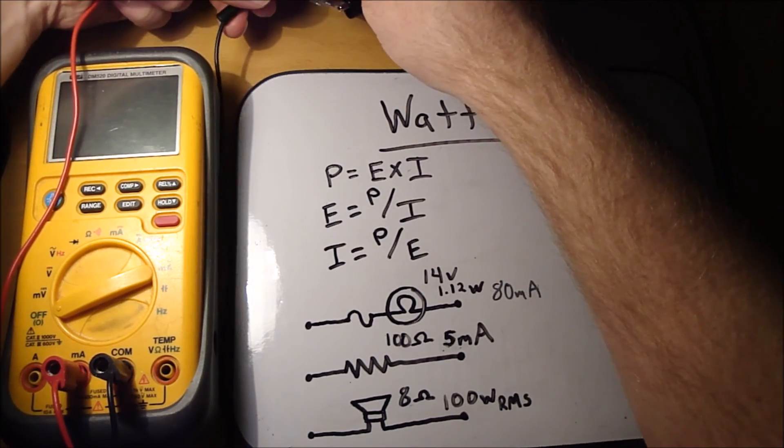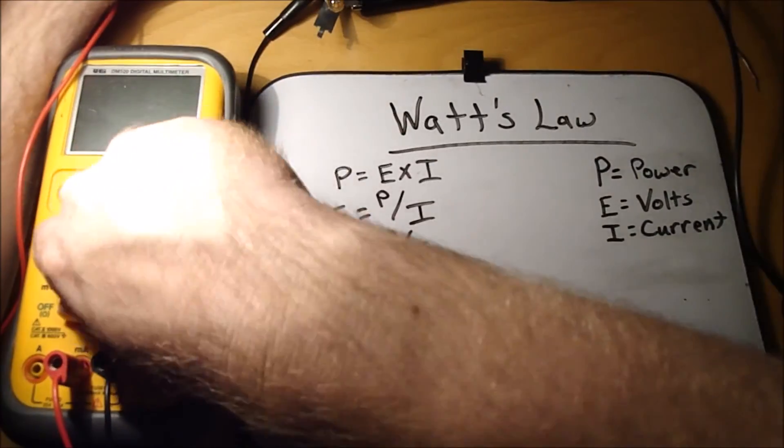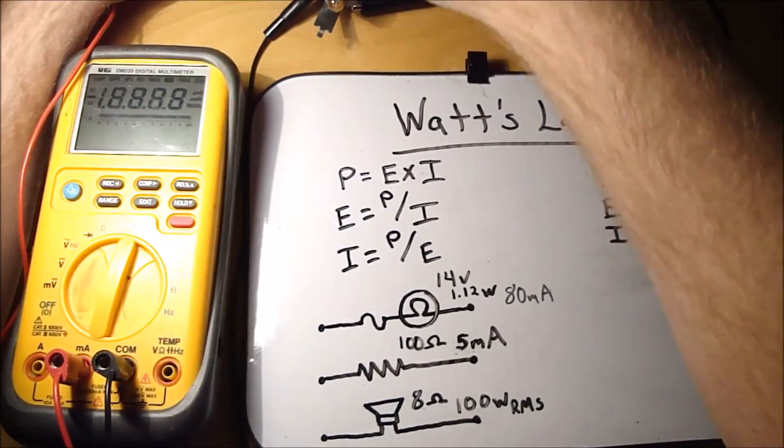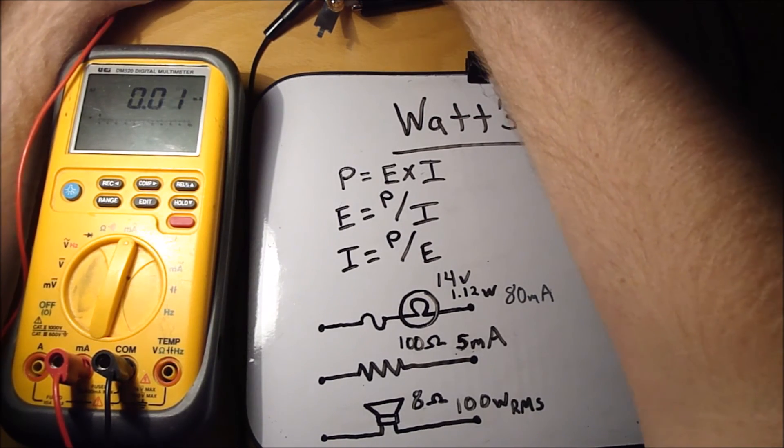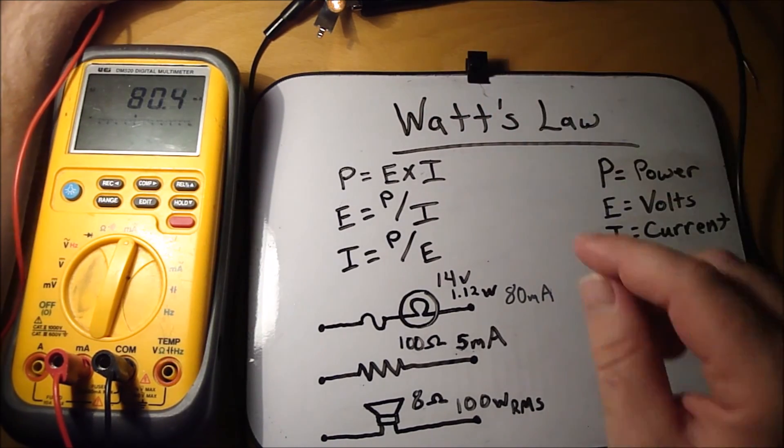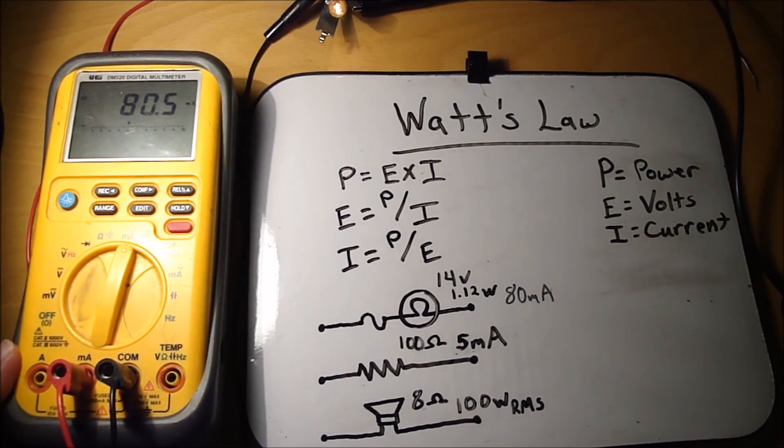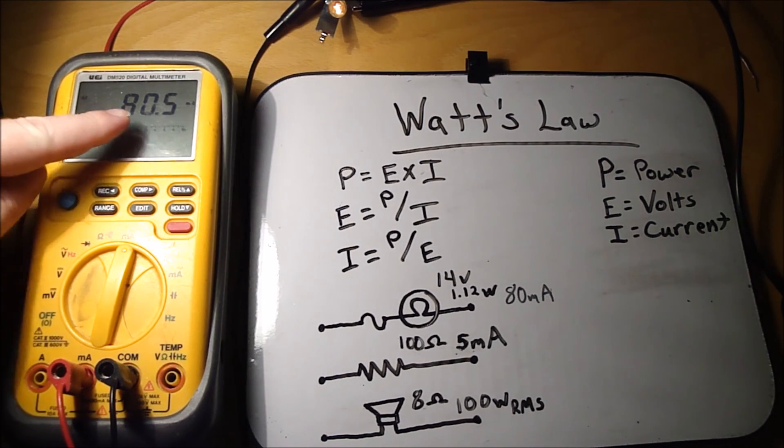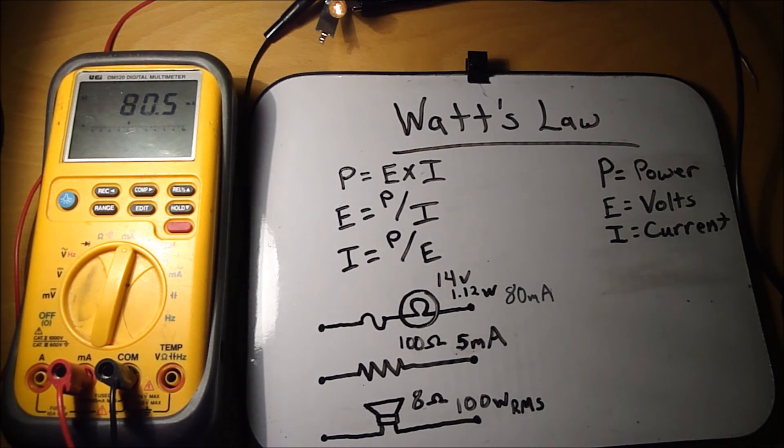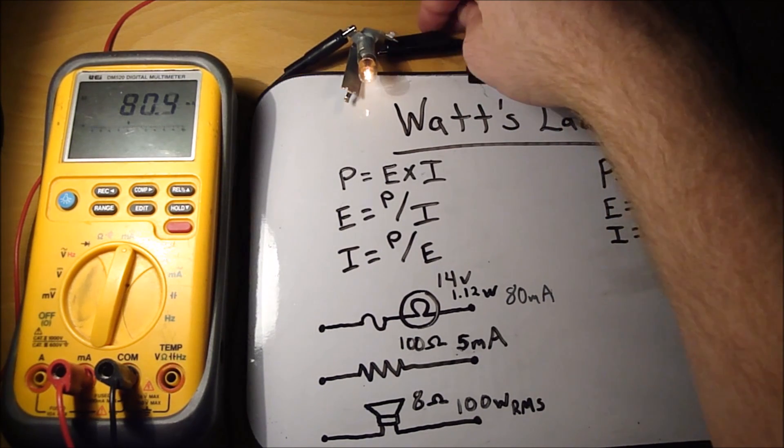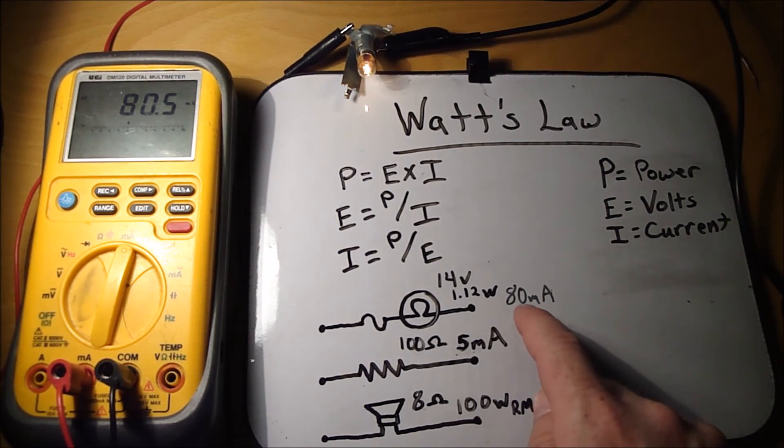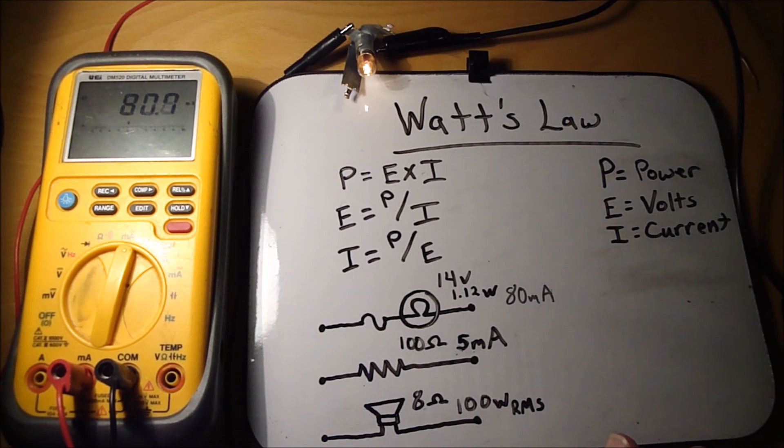I'm going to go ahead and put the meter in series with the light bulb. We're going to be measuring milliamps. Alright, so we're measuring 80.5 milliamps. And our calculations was 80 milliamps, so that's pretty much right on the money.